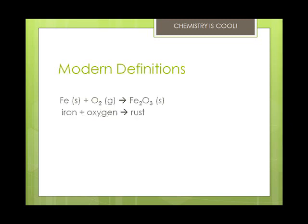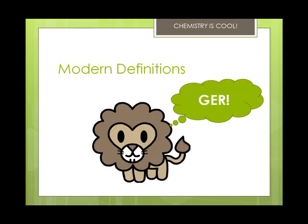The modern definitions of reduction and oxidation involve the movement of electrons. The highly electronegative oxygen atom takes electrons to form an anion. So loss of electrons is oxidation, and gain of electrons is reduction. The way to remember this is: Leo the lion says GER — loss of electrons equals oxidation, gain of electrons equals reduction.